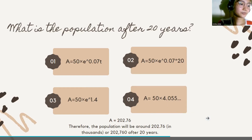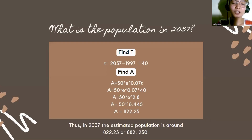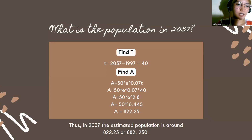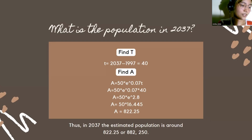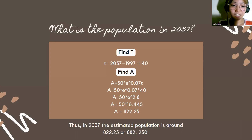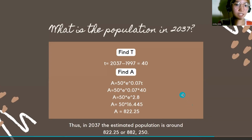The next problem asks for the population in 2037. We need to find the time t since it is not directly indicated. Using the given years 2037 and 1997, we subtract: 2037 minus 1997 equals 40. So our time t here is 40 years.